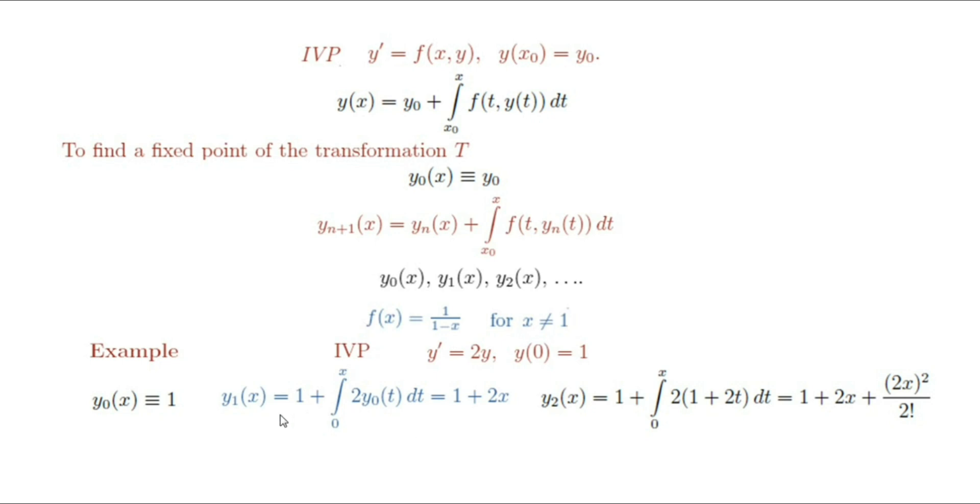It can be shown by induction that the nth iterate is y_n(x) equals 1 plus 2x plus (2x)²/2! plus ... (2x)ⁿ/n!. In closed form, it is the sigma i equals 0 to n of (2x)ⁱ/i!, which is the nth partial sum of the Maclaurin series for e^(2x). Thus, as n tends to infinity, we conclude that y_n(x) tends to e^(2x).